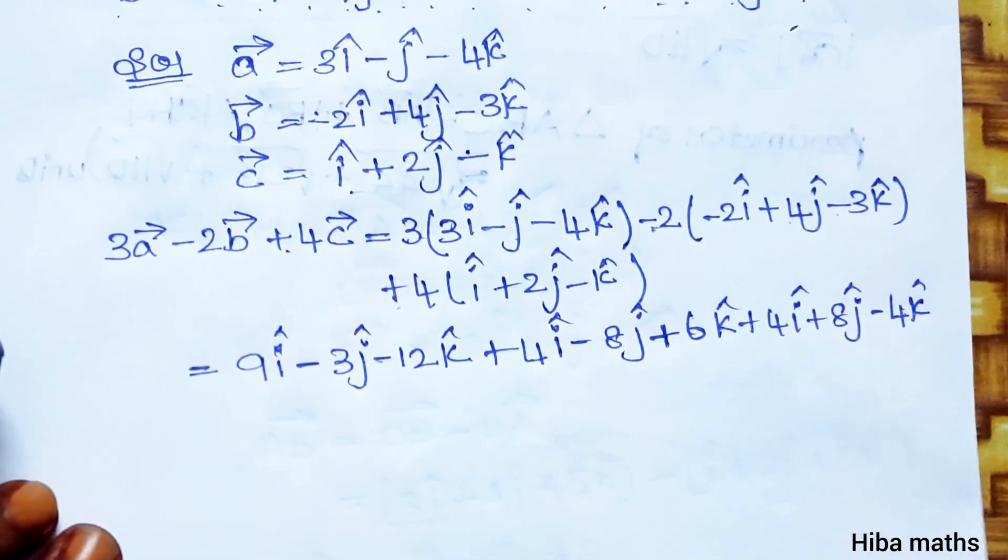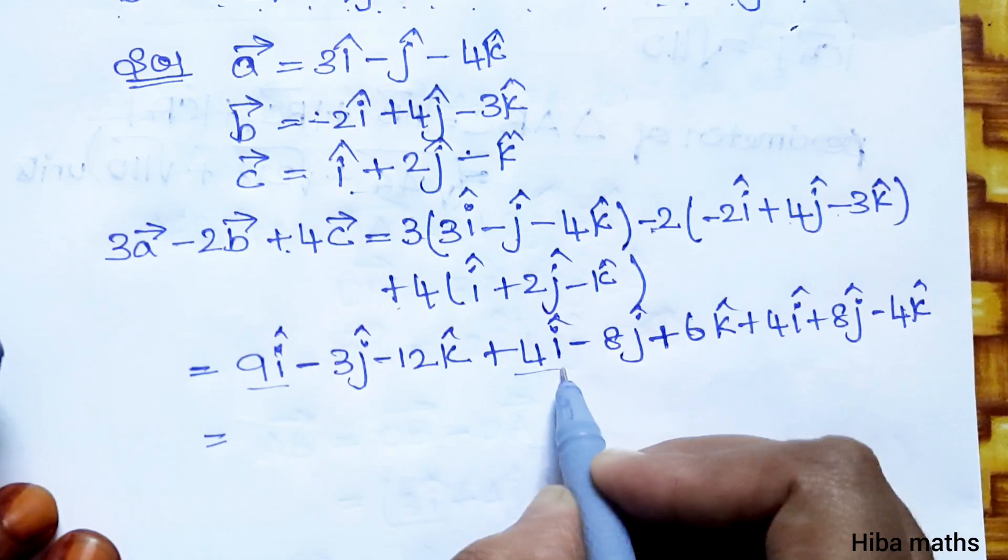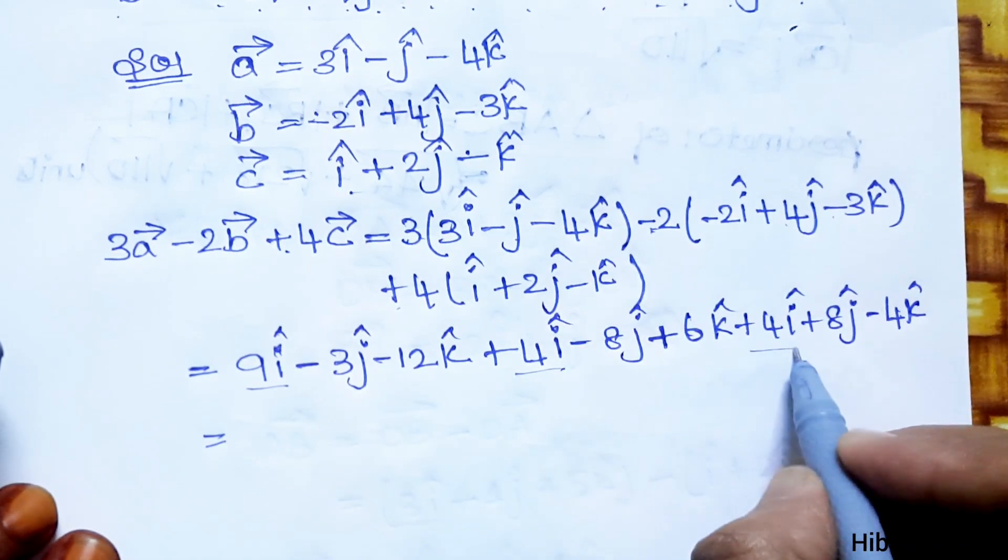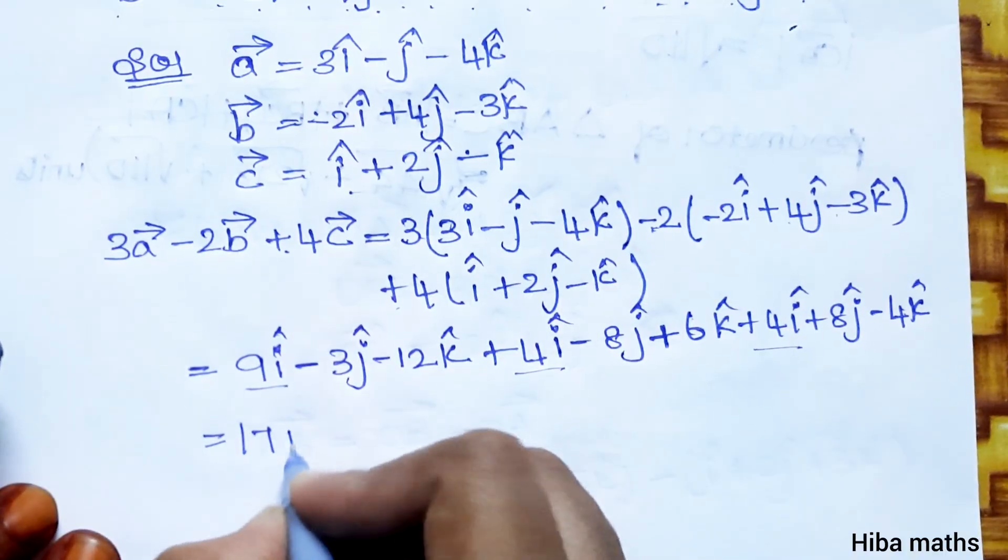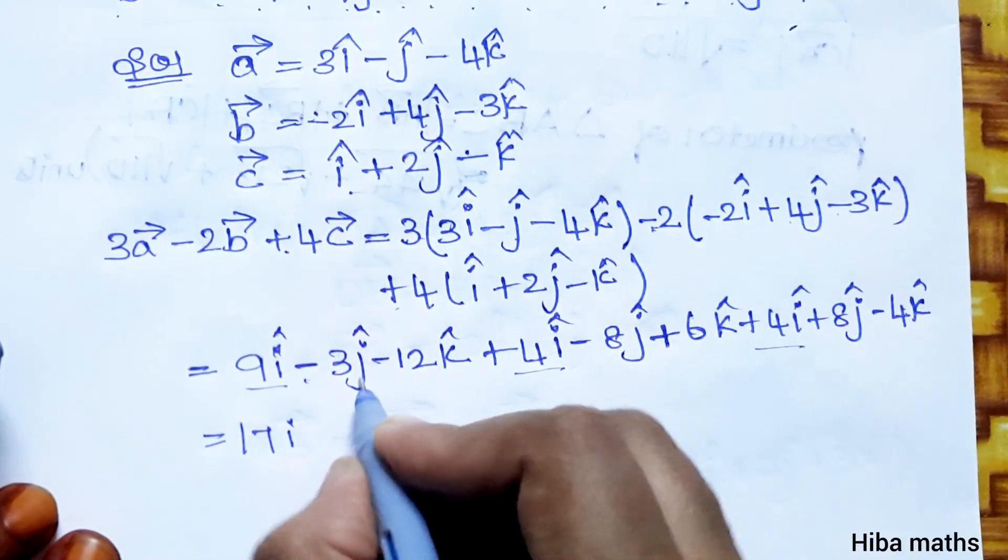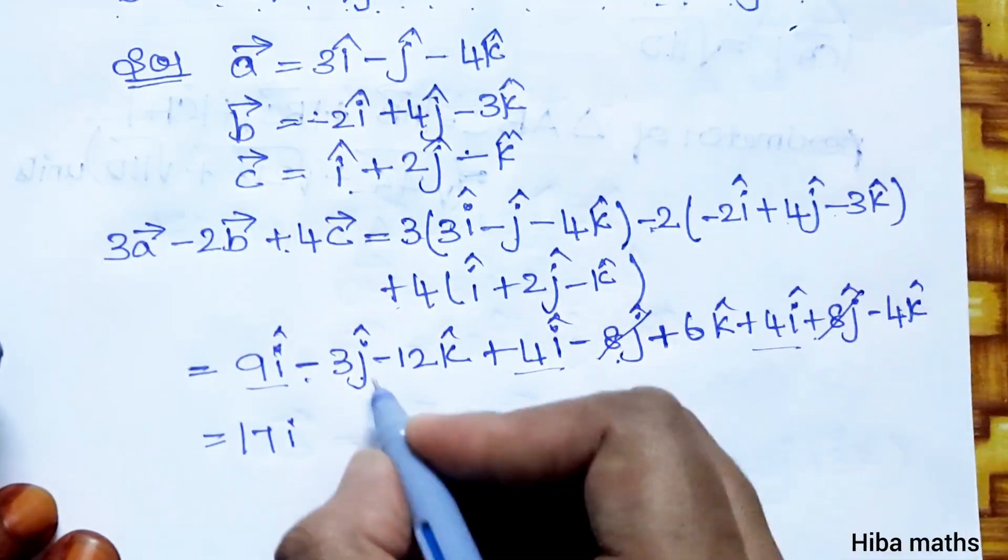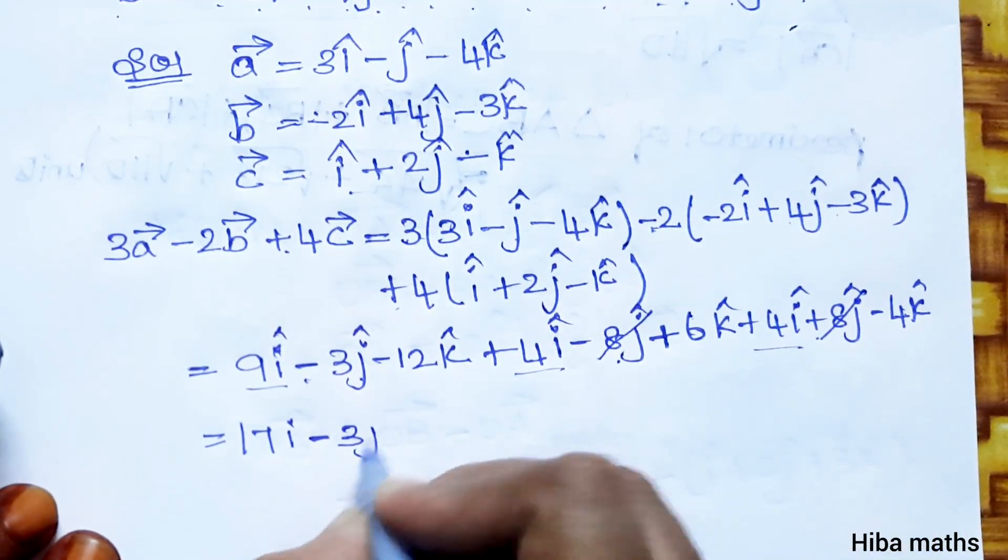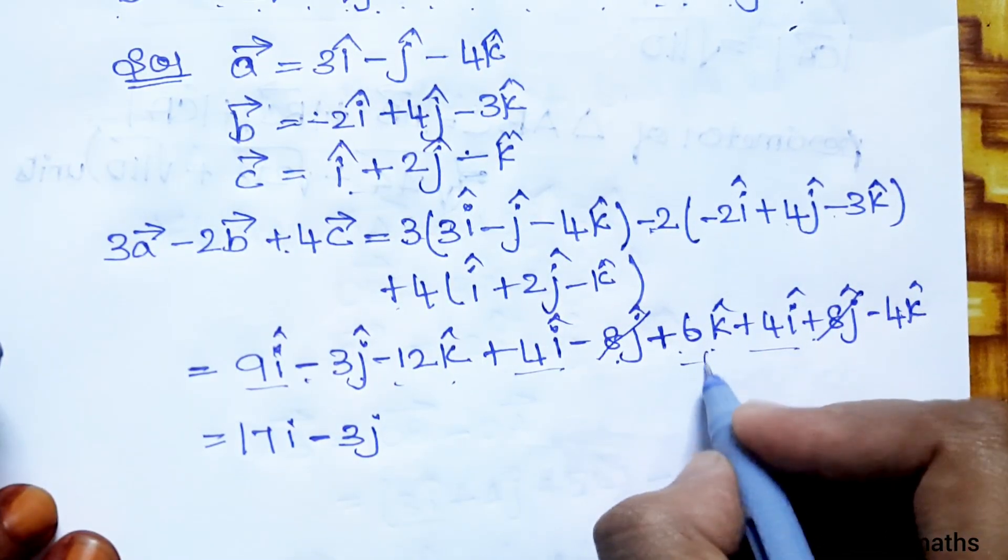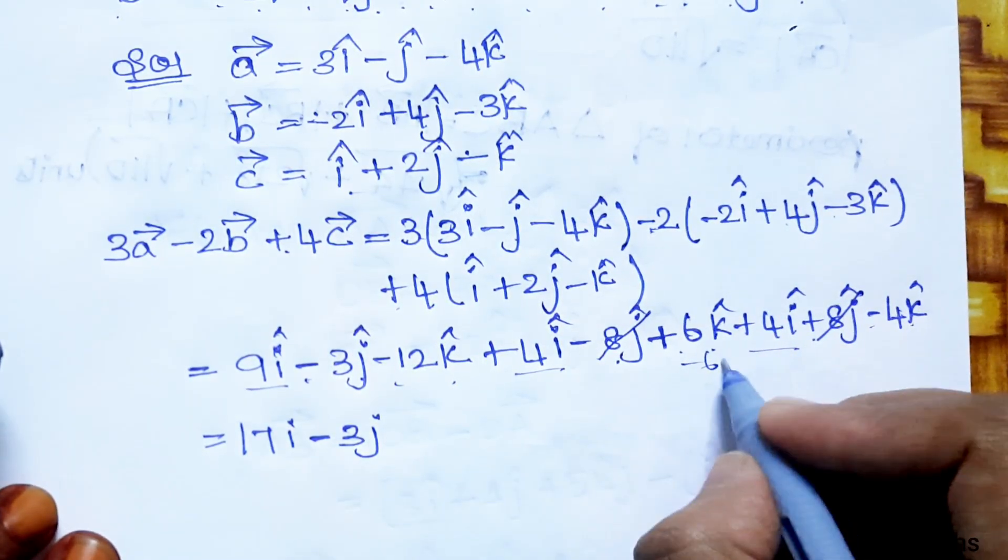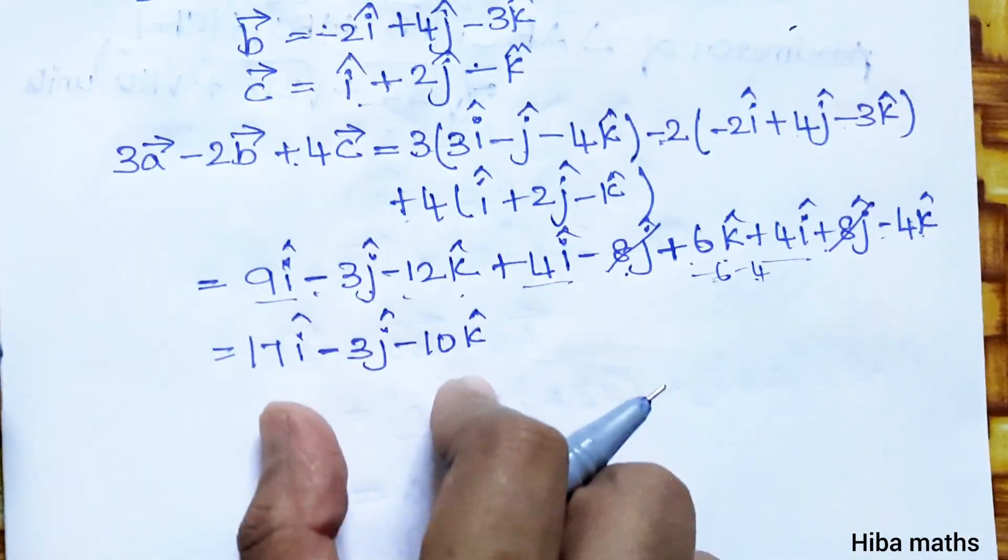Now we simplify. For i terms: 9i plus 4i plus 4i equals 17i. For j terms: minus 3j minus 8j plus 8j cancels to minus 3j. For k terms: minus 12k plus 6k minus 4k equals minus 10k.